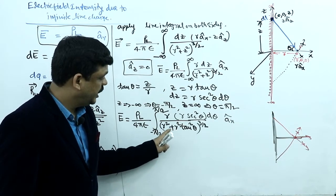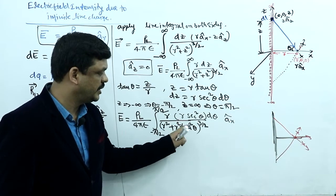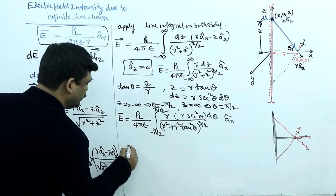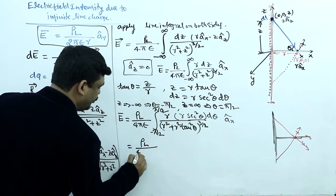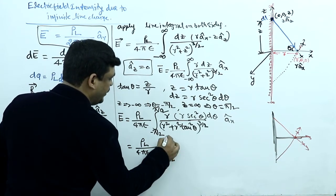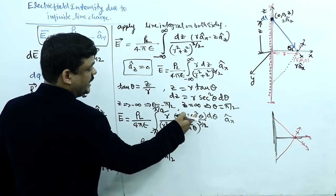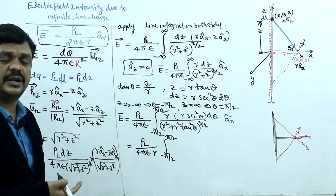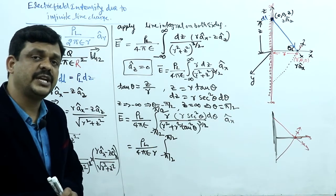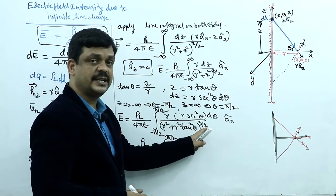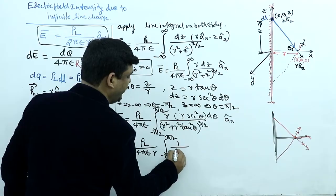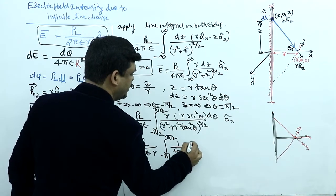Taking r² common from the denominator gives r³ in the denominator and r² in the numerator, resulting in 1/r outside the integral. The expression simplifies: sec²θ divided by sec³θ gives 1/secθ = cosθ. So the integral reduces to ∫cosθ dθ.